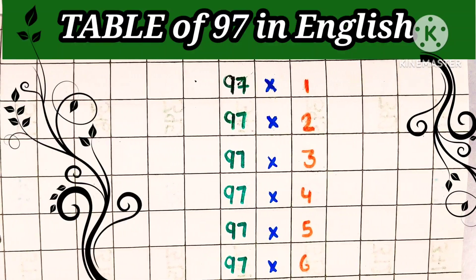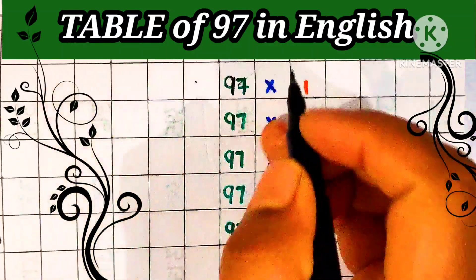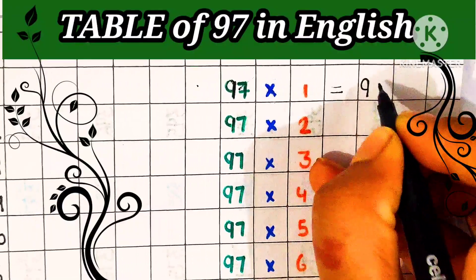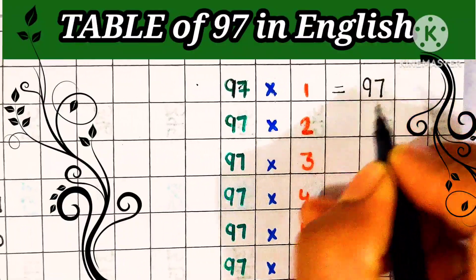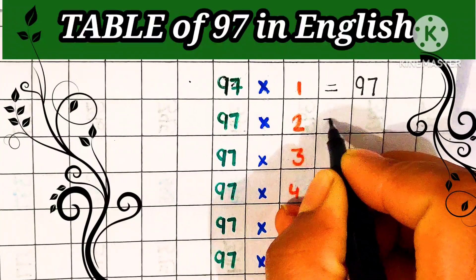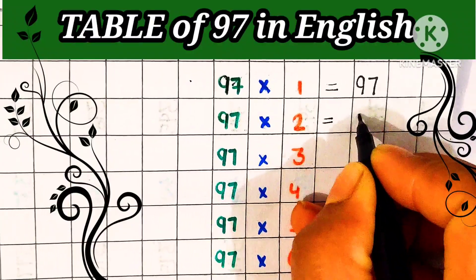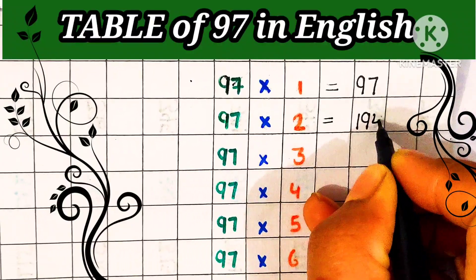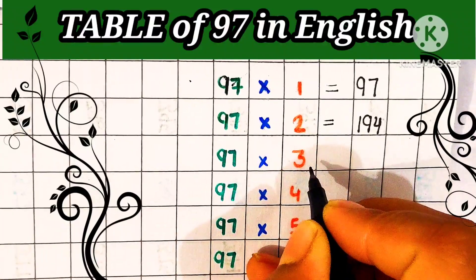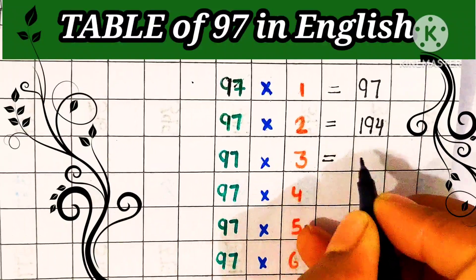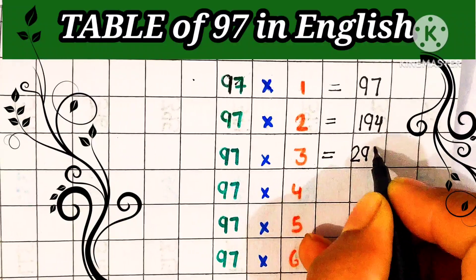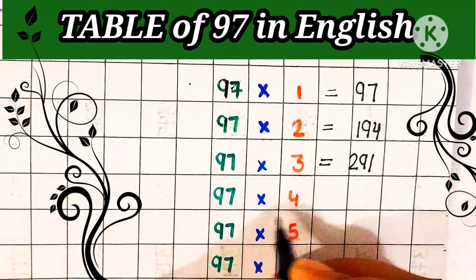Hello student, today we learn the table of 97 in English. 97 ones are 97, 97 twos are 194, 97 threes are 291.